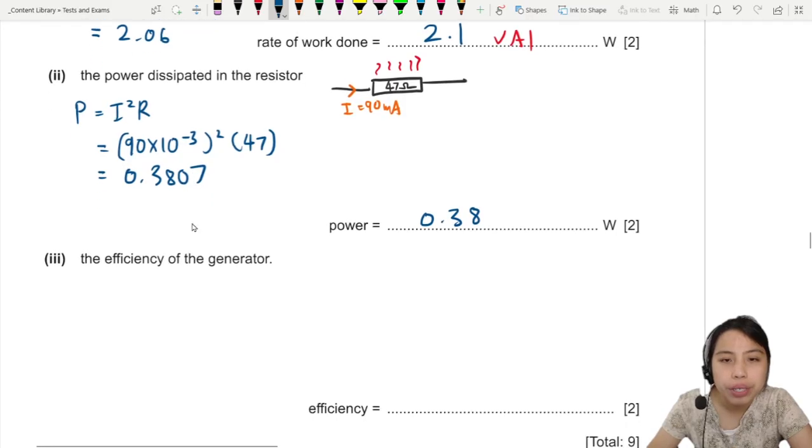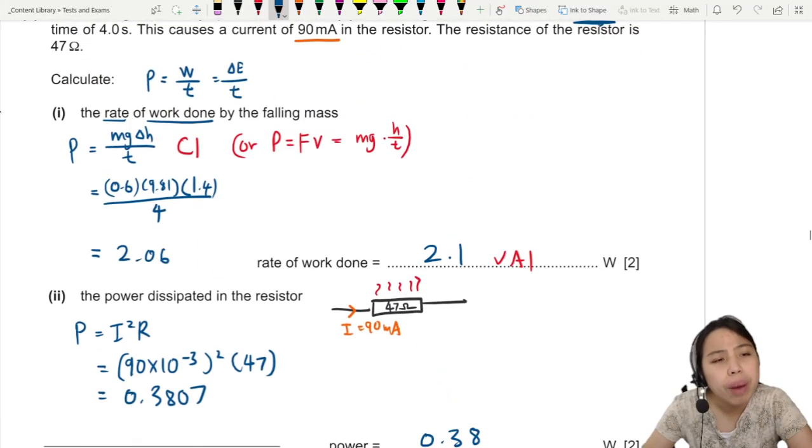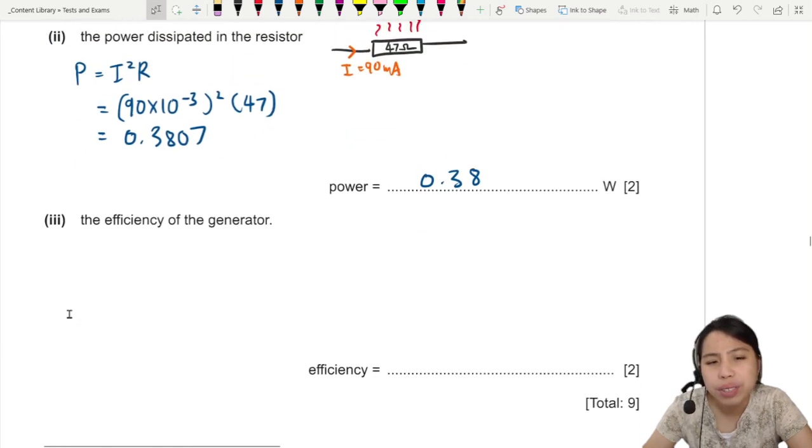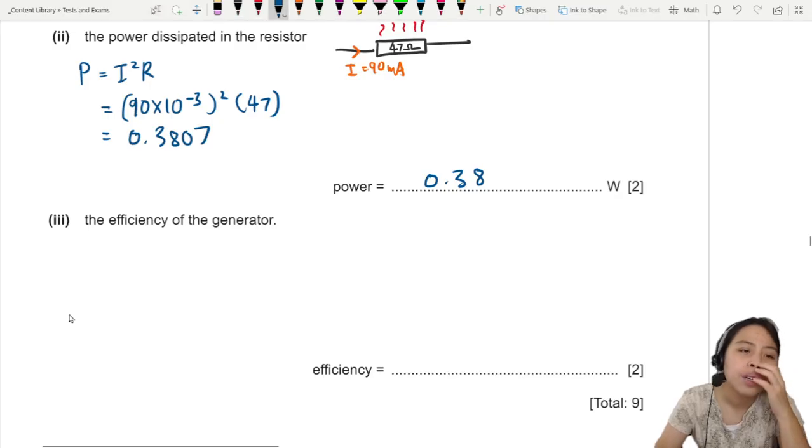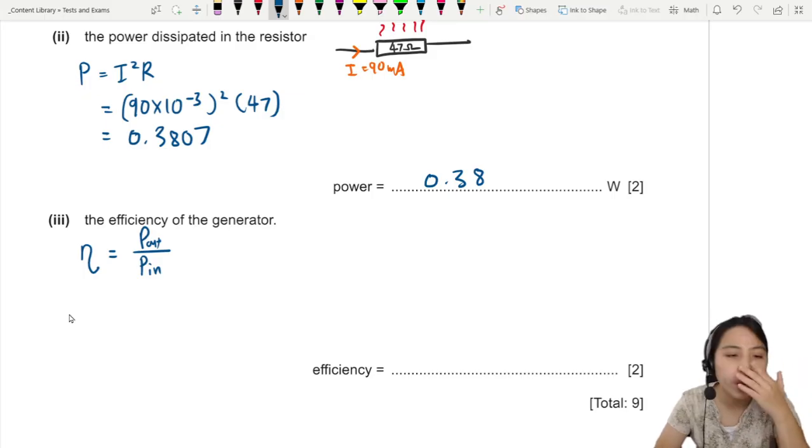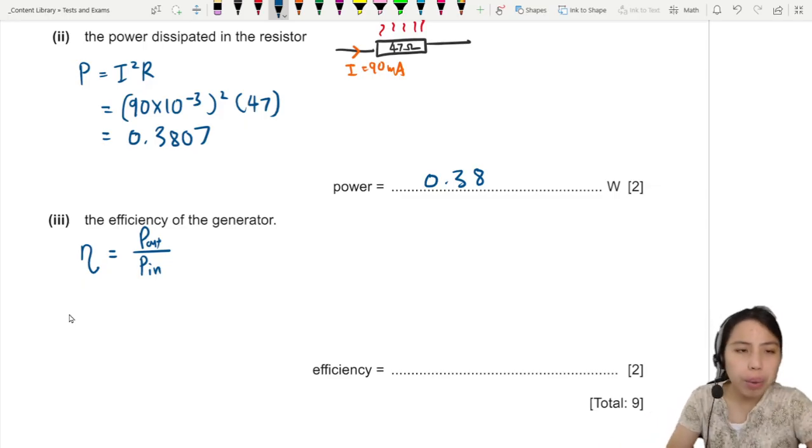Okay, last part. Efficiency of the generator. So if there's part one, two, three, there's a chance it's related. But how do I find the efficiency? So efficiency, I use this symbol eta. Efficiency. We need to use the power output of the generator over the power input of the generator, and you can do it in percentage or in fraction. So let's do the fraction.